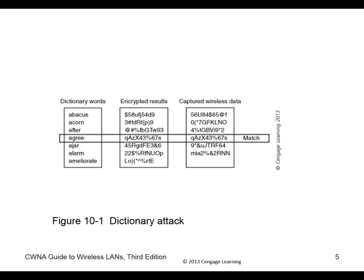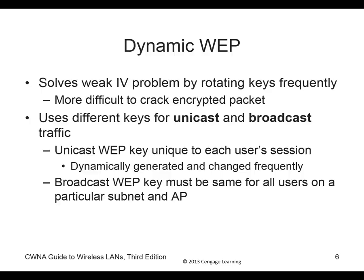With WEP, encryption results would occasionally match captured wireless data — not good at all. The rotating keys kept cycling predictably: 1, 2, 3, 4, 5, 6, 7, 8, 9, 0 — repeating. If you see the same pattern over and over, you can break it pretty fast.